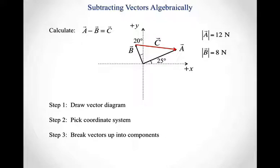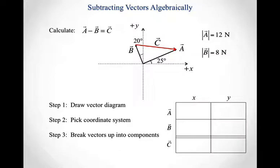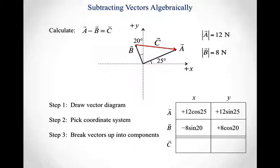Step three: break our vectors up into components. We'll make a table. We have two coordinate axes, so we need x and y components. Vector A points up and to the right, has a magnitude of 12 newtons, and makes a 25-degree angle with the positive x-axis. So the x component of vector A is positive 12 cosine 25, and the y component is positive 12 sine 25. Vector B points up and to the left, has a magnitude of 8 newtons, and makes a 20-degree angle with the y-axis. So vector B has an x component of negative 8 sine 20 and a y component of positive 8 cosine 20.